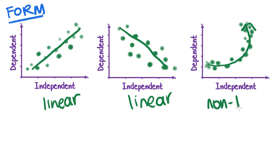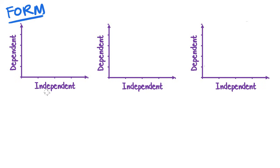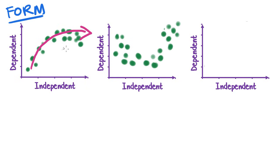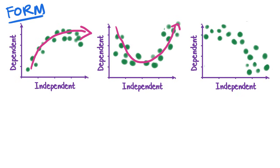If the dots follow a curve — not a straight line — then it's non-linear. Some other non-linear forms might look like a curve going upward, or like a parabola shape. Even if there's clearly a pattern or relationship present, if the form is not a straight line then it's non-linear. You might also see a curve going downward across the page in a curvy sort of way — that's still non-linear. All of these are examples of non-linear form.